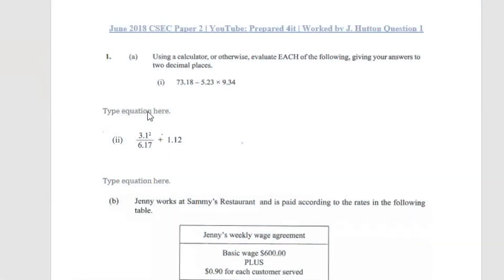Question 1a says: using a calculator or otherwise, evaluate each of the following, giving your answers to two decimal places. We use order of operations — brackets, multiplication, division, addition, then subtraction. Here we see a multiplication and a subtraction sign, so we work out the multiplication first.